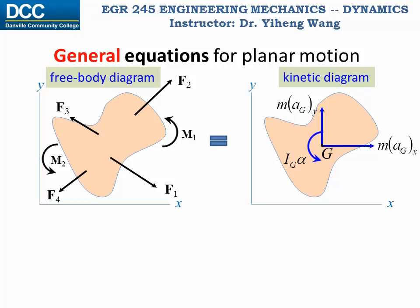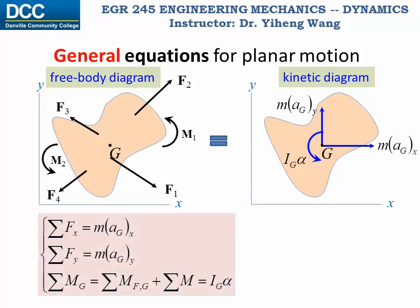Since we can summarize the resultant moment about any arbitrary point P, for convenience we can summarize it about the gravitational center point G. The third equation then becomes: the resultant moment about point G simply equals IG·alpha, where IG is the mass moment of inertia of the object with respect to an axis passing through its gravitational center G and perpendicular to the x-y plane.